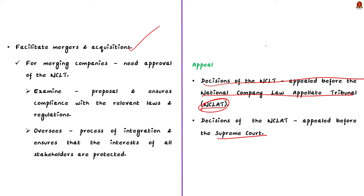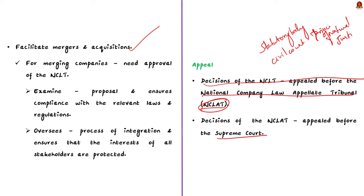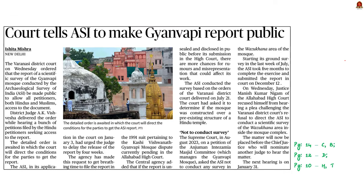To summarize: NCLT is a statutory body that specifically deals with corporate disputes of a civil nature and decides matters in accordance with principles of natural justice. It handles insolvency and liquidation of corporate companies, takes up cases related to sick companies, and oversees the process when two or more companies wish to merge or acquire. With these points learned, let us move to the next news article.